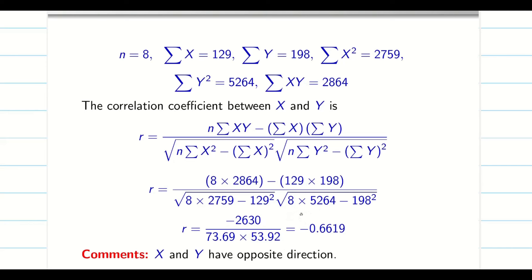We found the correlation coefficient is minus 0.6619. So you can comment x and y are negatively correlated. That means x and y travel in opposite direction.